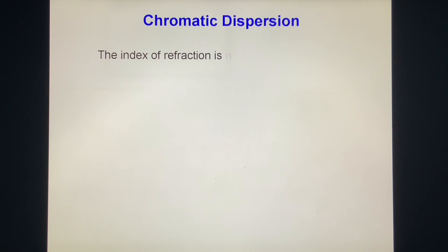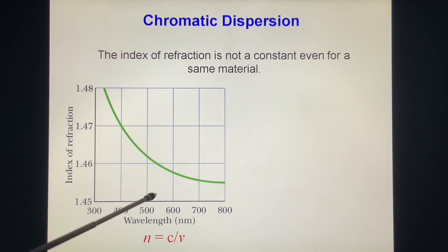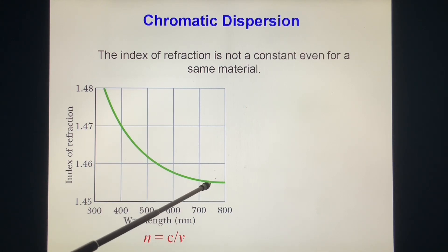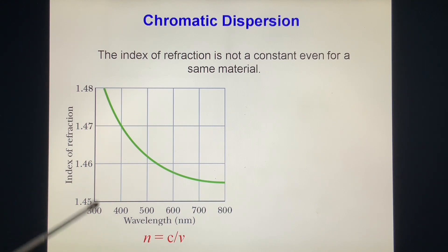Chromatic dispersion. The index of refraction is not a constant, even for the same material. This is the light — this is the red line, this is the blue line — this is the wavelength. You can see the index of refraction changes a little bit.